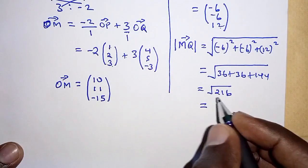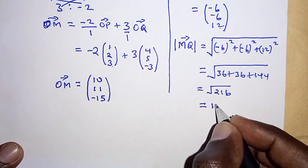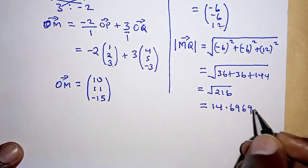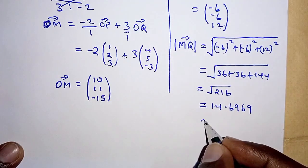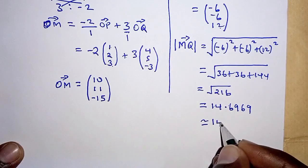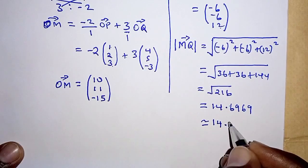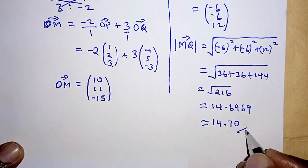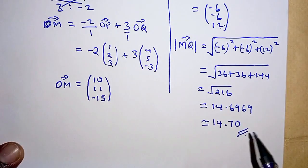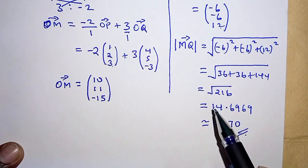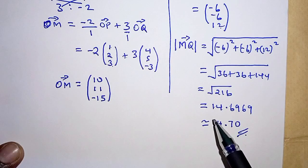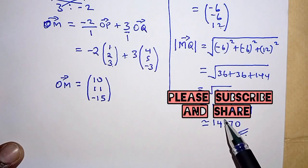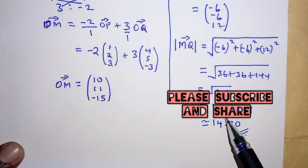When we work out this, we will have 14.6969 and this is approximately 14.70 units. And thus we have the modulus of MQ as required in the question. With this we come to the end of the solution to this problem. Thank you for watching, see you on the next video.